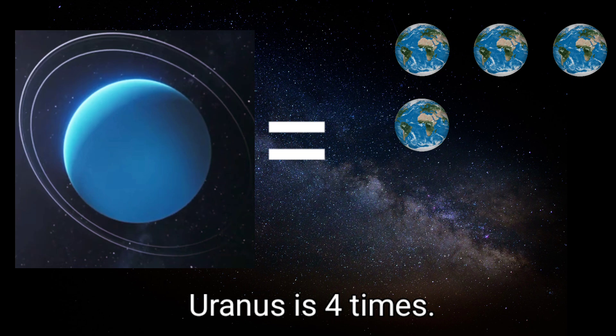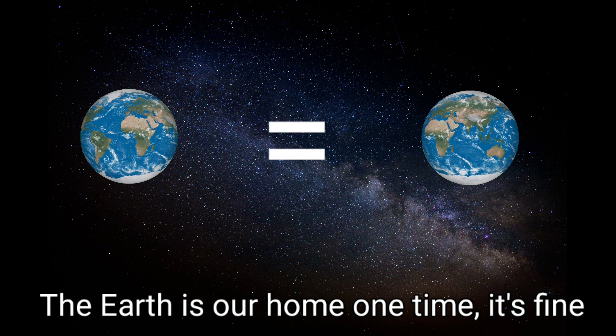Uranus is four times, Neptune's three point nine. Earth is our home, one time it's fine.